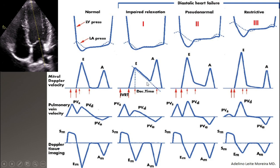With progressing diastolic dysfunction, not only does relaxation have a problem, but expansion of the left ventricle becomes harder — the left ventricle becomes stiffer. As a result, blood is retained little by little in the left atrium, and pressure increases to push blood into the left ventricle. With this increasing left atrial pressure, E starts going higher again. When diastole starts, blood flows faster, so E increases, becomes shorter, and acceleration time decreases.